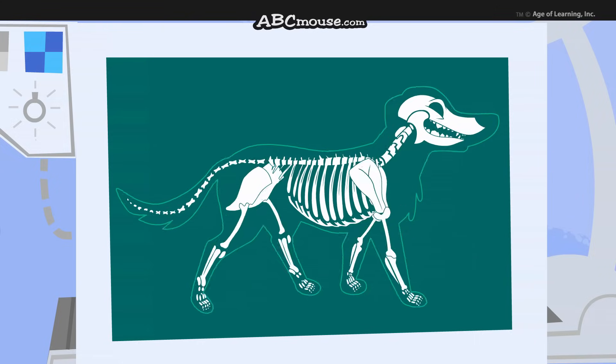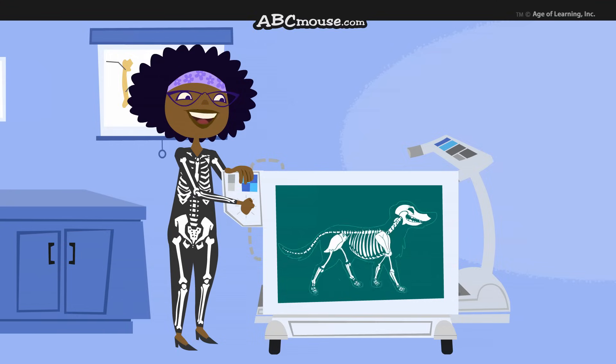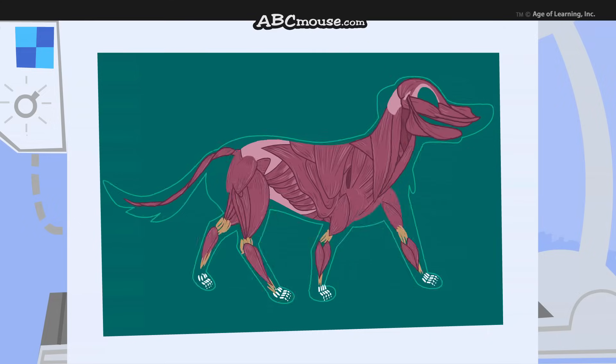Right now, it looks like Jester's skeleton is moving on its own. But if we adjust my awesome body scanner, we can see Jester's muscles. What a strong dog you are.